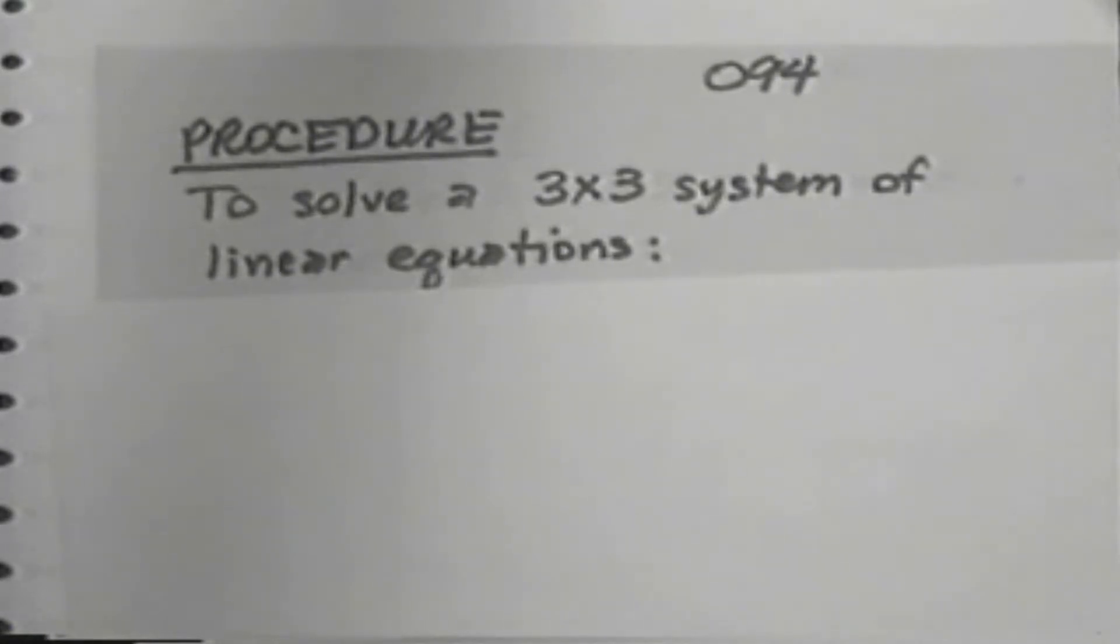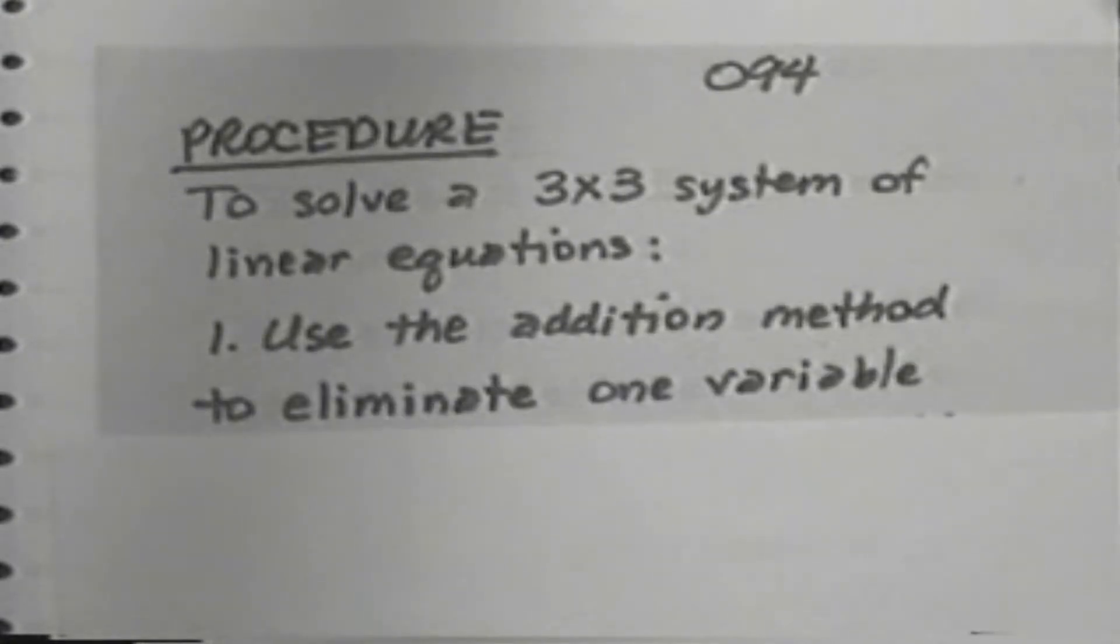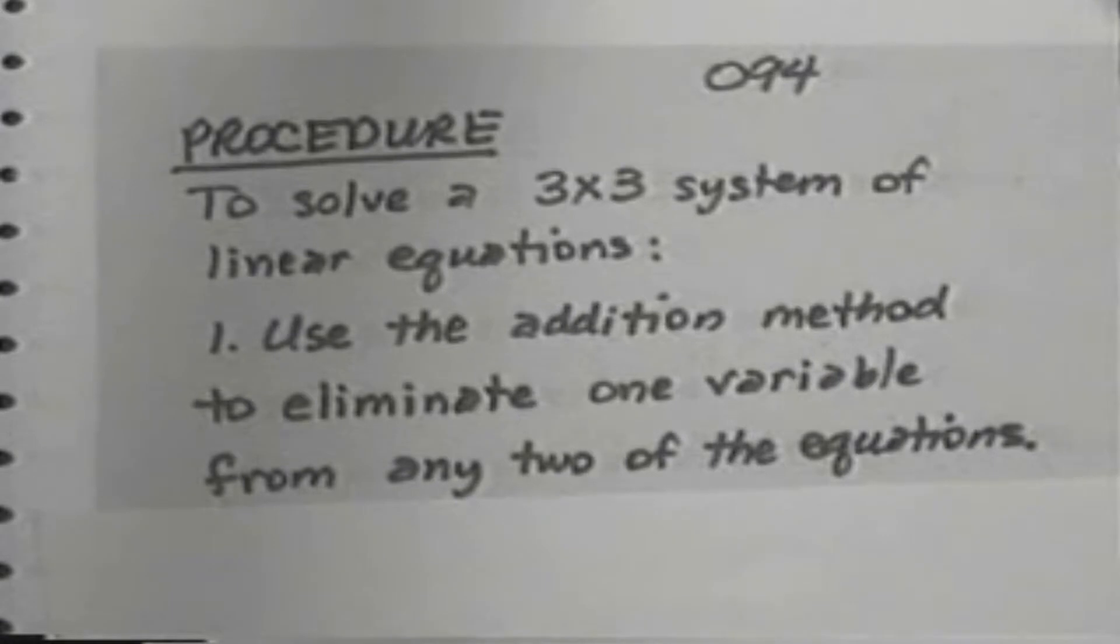This is the procedure to solve a 3x3 System of Linear Equations. We will have 5 steps. Step 1, use the addition method to eliminate one variable from any two of the equations.